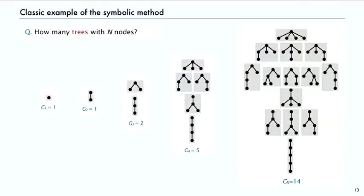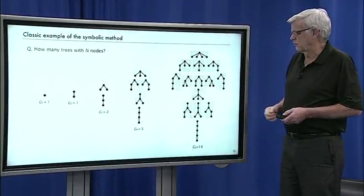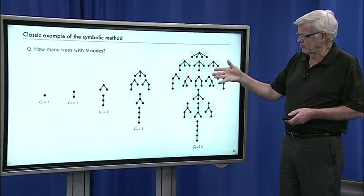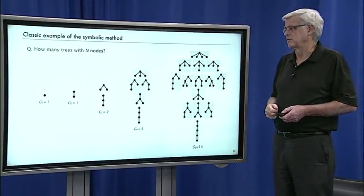And so, these are the small values. There's five different trees of five nodes. And these two trees are different because the order is significant. So these are the familiar Catalan numbers.